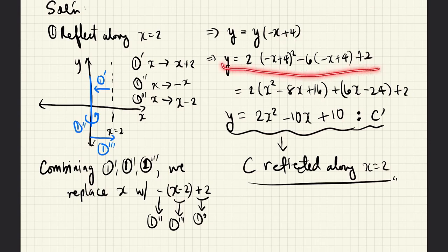And here, we do the replacement. This is the original x as well as this. And when we simplify, we obtain this and finally, this. This is now the graph that is symmetric to C along the x equals 2 line.